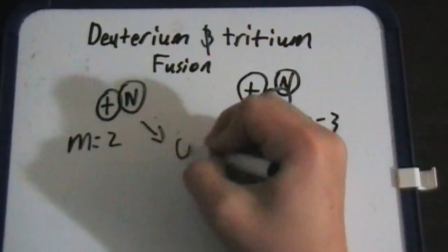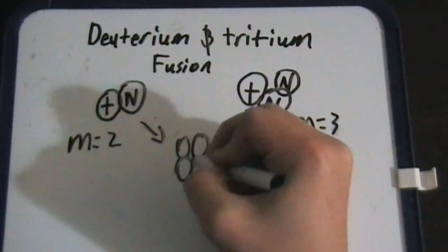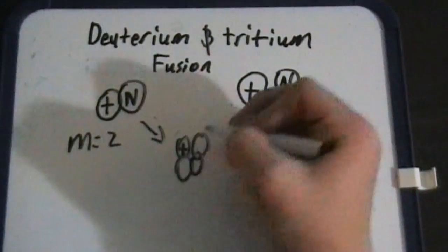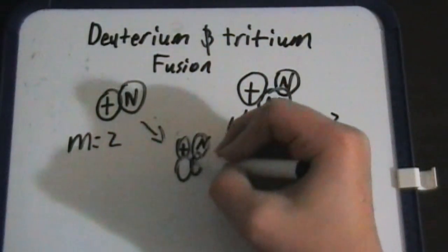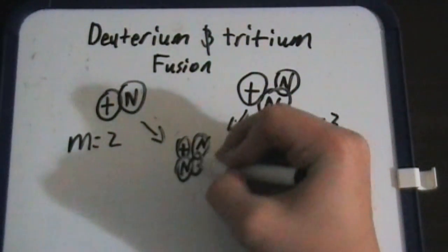So when these two are collided together, they form a helium atom, which is two protons, two neutrons.